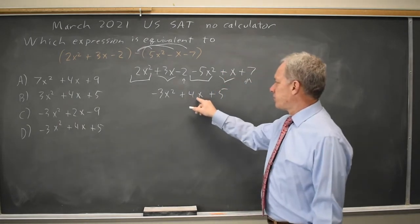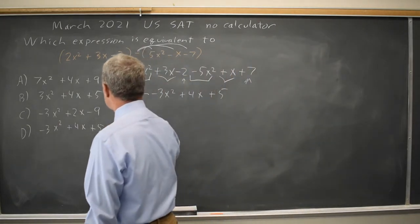Negative 3x squared plus 4x plus 5 matches choice D.